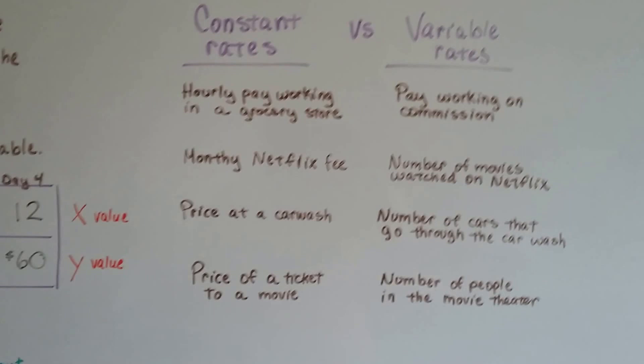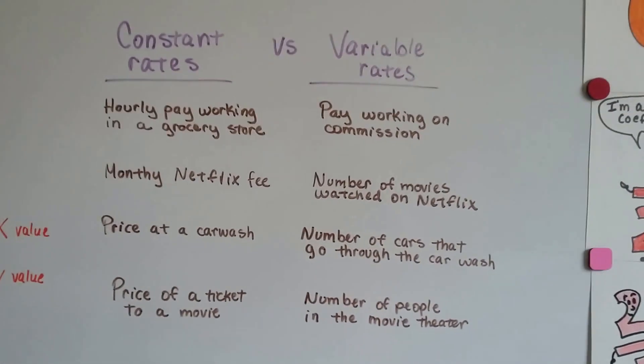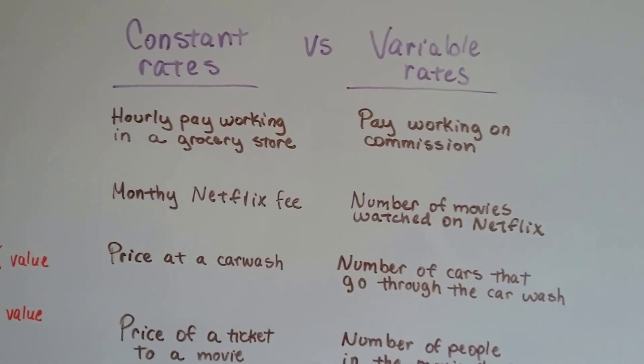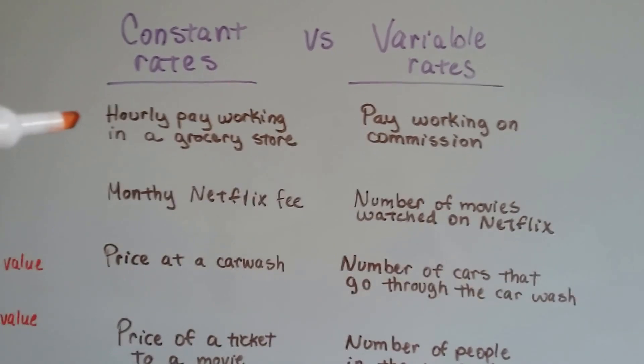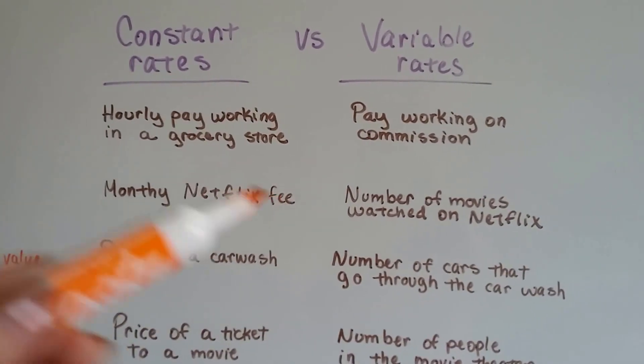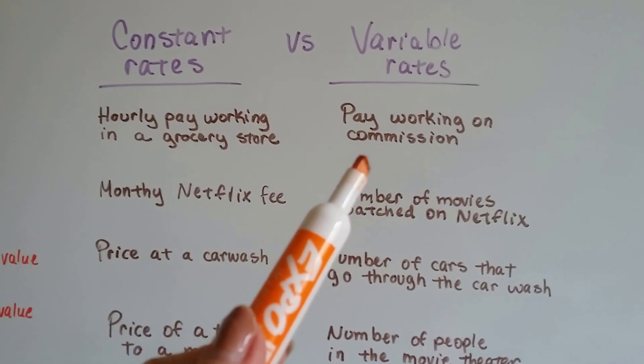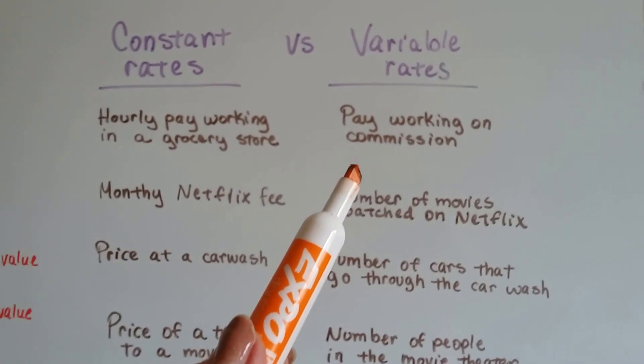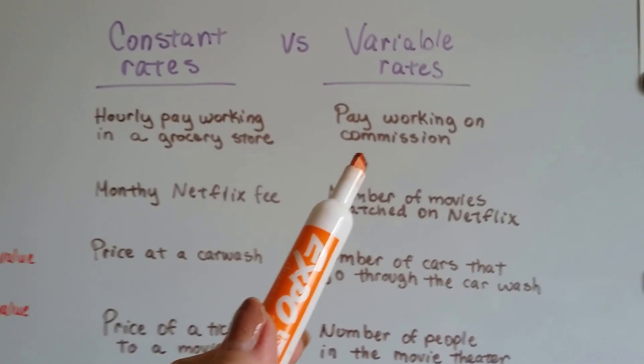Now, if we look at constant rates versus variable rates, constant rates would be like the hourly pay working in a grocery store. Variable rate would be the pay you would get working on commission, because you don't know what customers are coming in or if you're even going to make money that day.